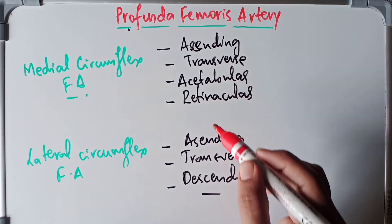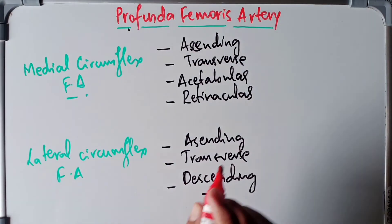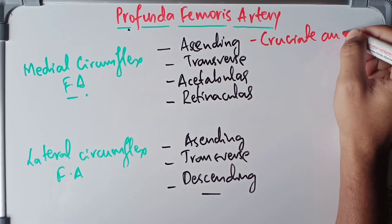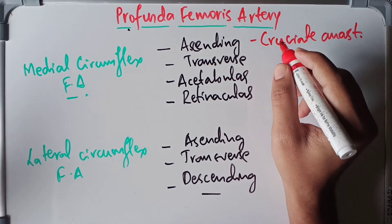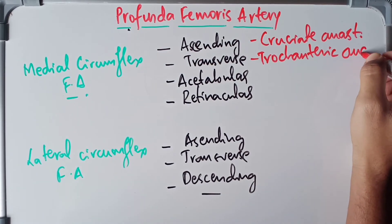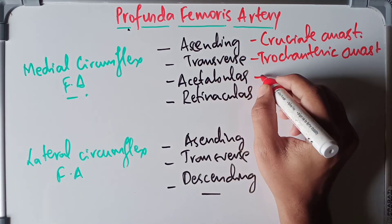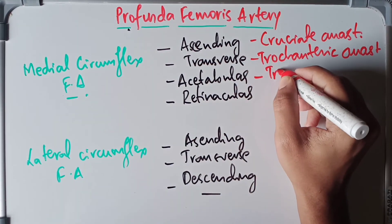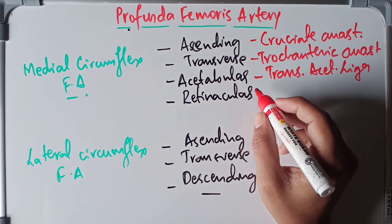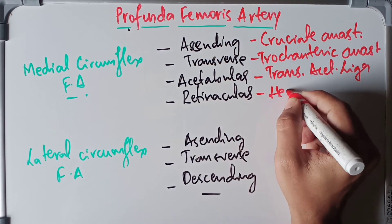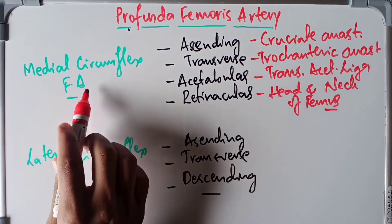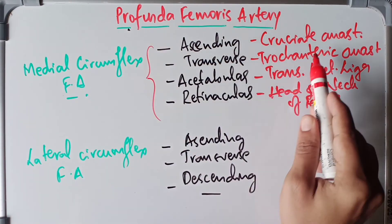Regarding the branches of the medial circumflex femoral artery: the ascending branch takes part in the cruciate anastomosis. The transverse branch takes part in the trochanteric anastomosis. The acetabular branch supplies the transverse acetabular ligament. The posterior retinacular branches supply the head and neck of the femur.